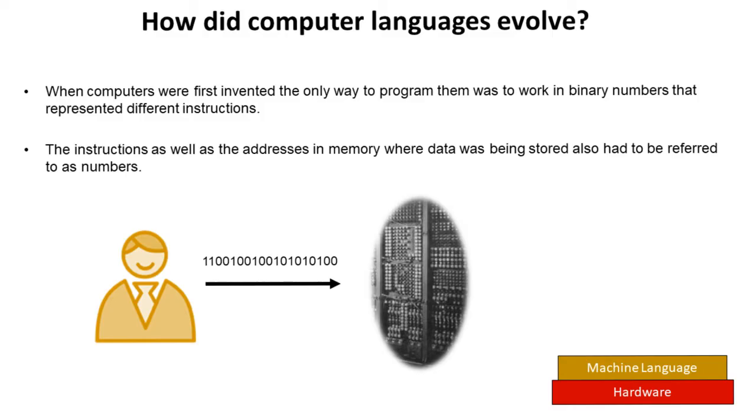A consequence of this of course was in the early days there were very few people who were able to program. Remembering the exact sequence of ones and zeros to carry out even an incredibly simple task was a very complex process. And the tiniest of errors caused the program not to work.